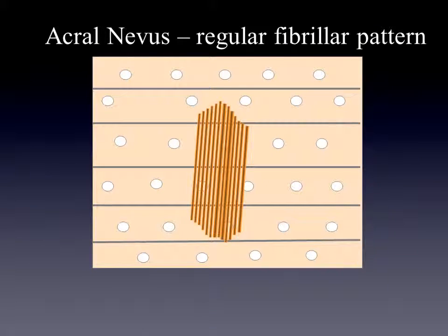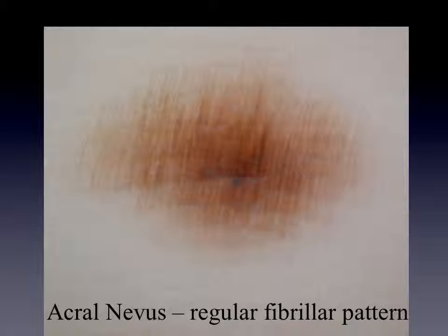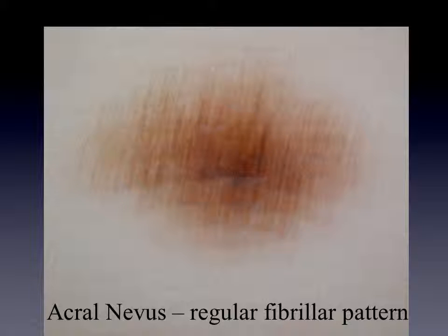Tiny, fine, and thin pigmented lines crossing the ridges and the furrows form the next pattern: the so-called regular fibrillar pattern. Here you see such an example of a fibrillar acral pattern. The pigmentation is like drawn with a pencil over the ridges and the furrows.